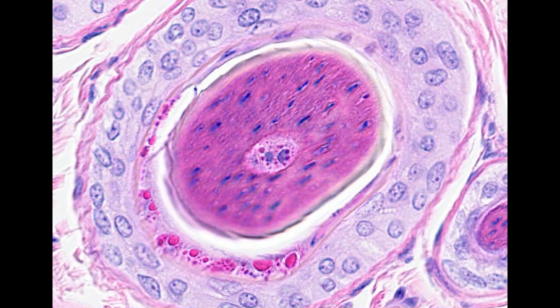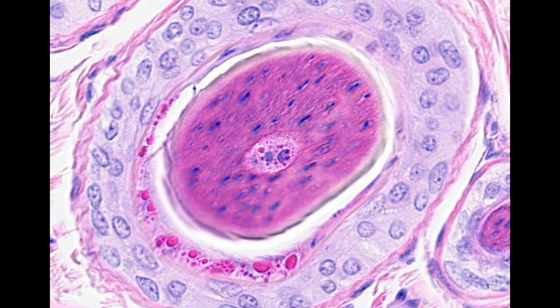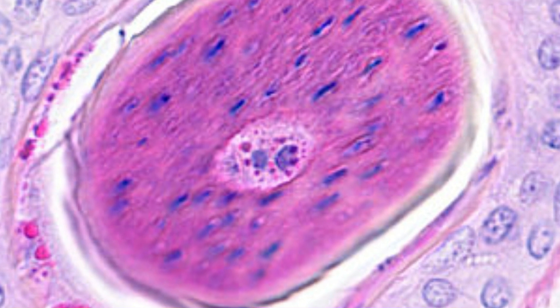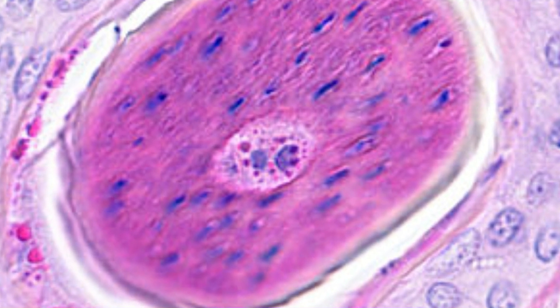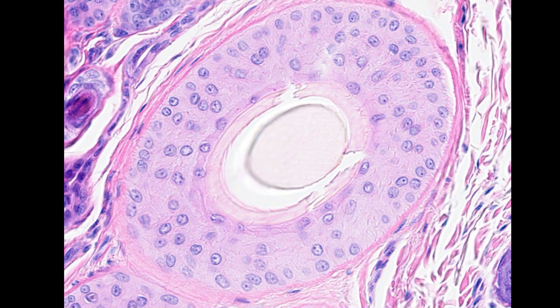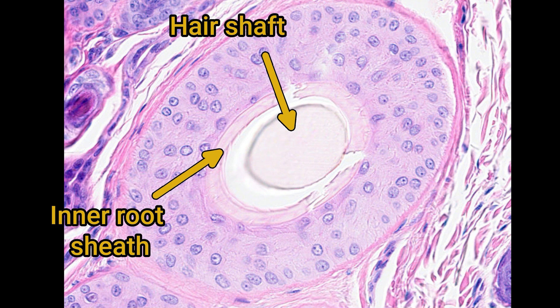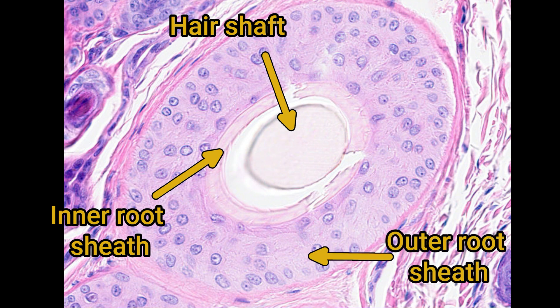Moving up the hair shaft, cornification is well underway in both layers of the inner root sheath and the hair shaft. Notice how the cells of the hair shaft cortex are beginning to lose their nuclei, while those of the cuticle are fully cornified. Once cornification is completed, the layers of the hair shaft are no longer visible; the inner root sheath is fully cornified, and the outer root sheath persists, now fully developed and much thicker than at the start.